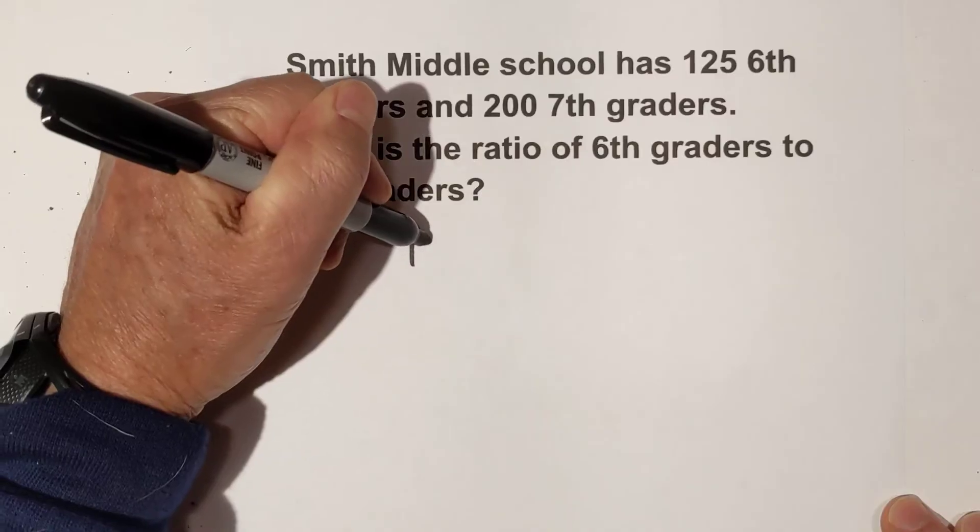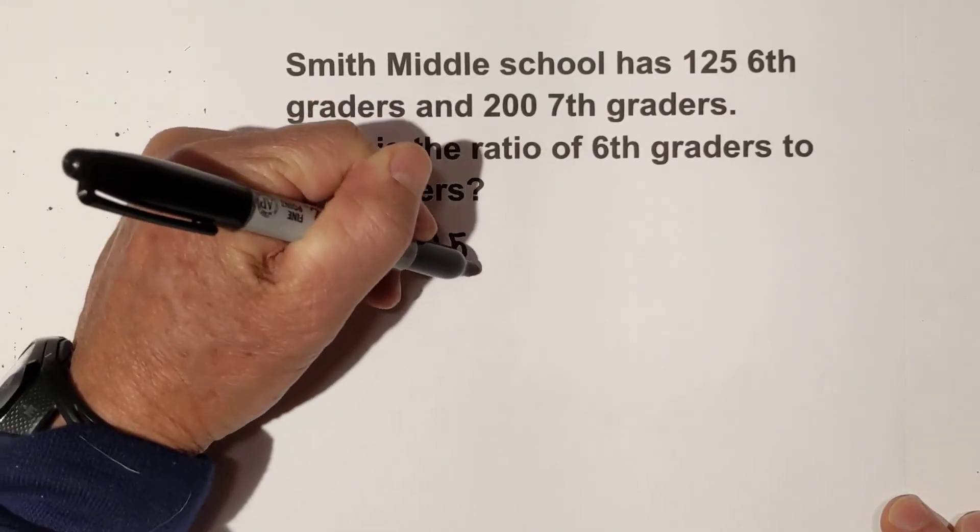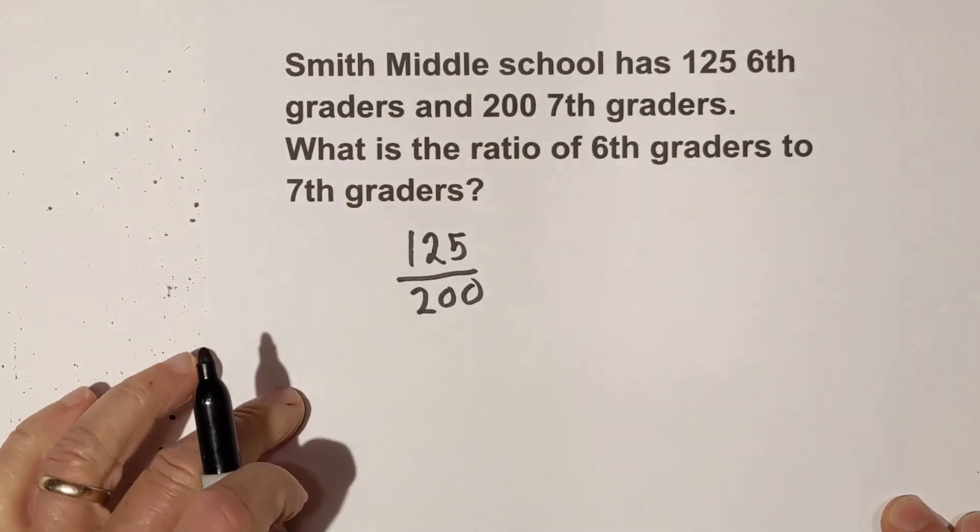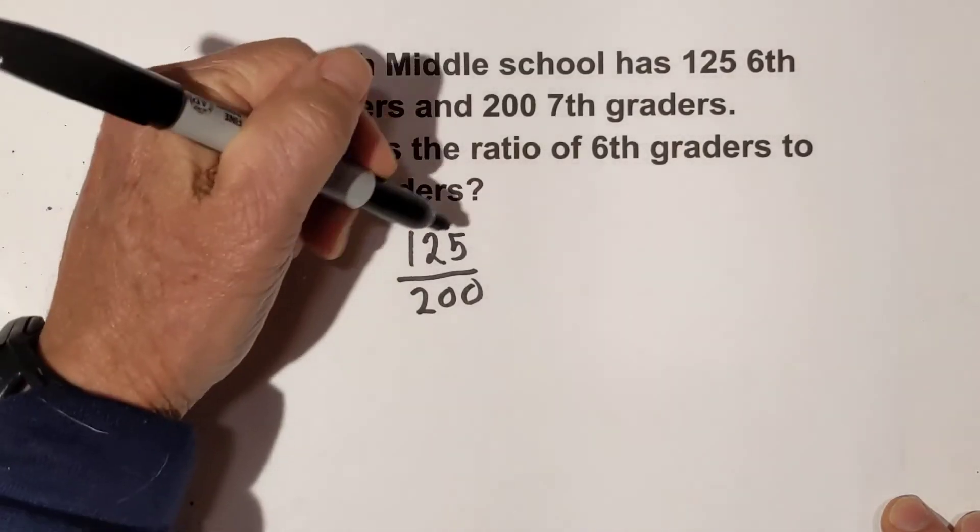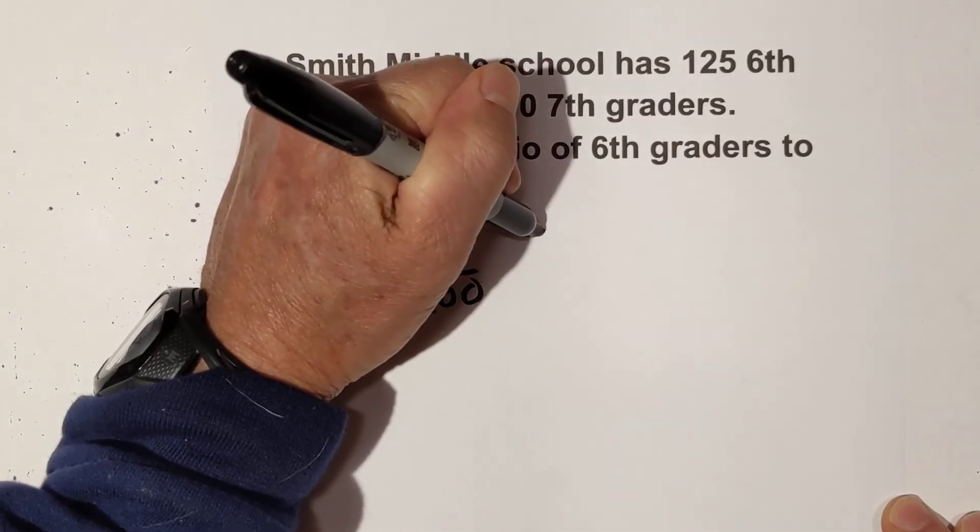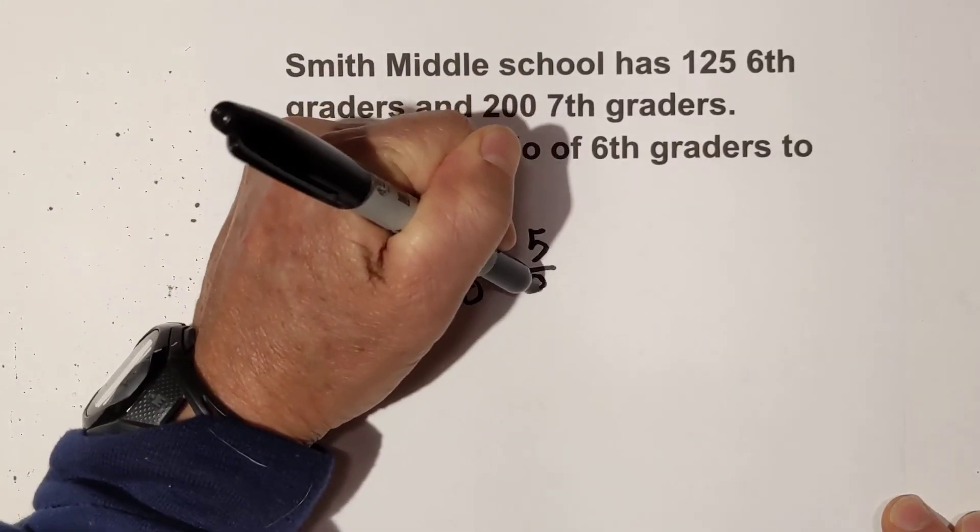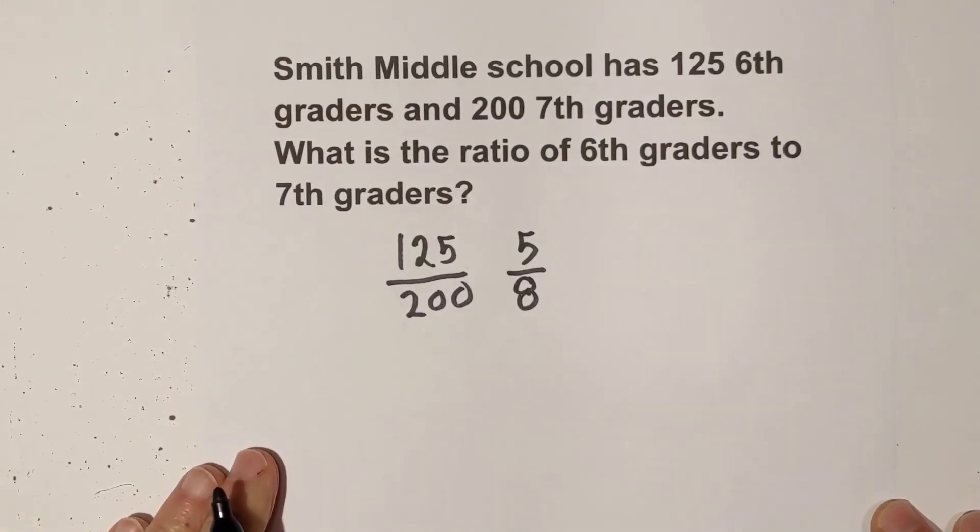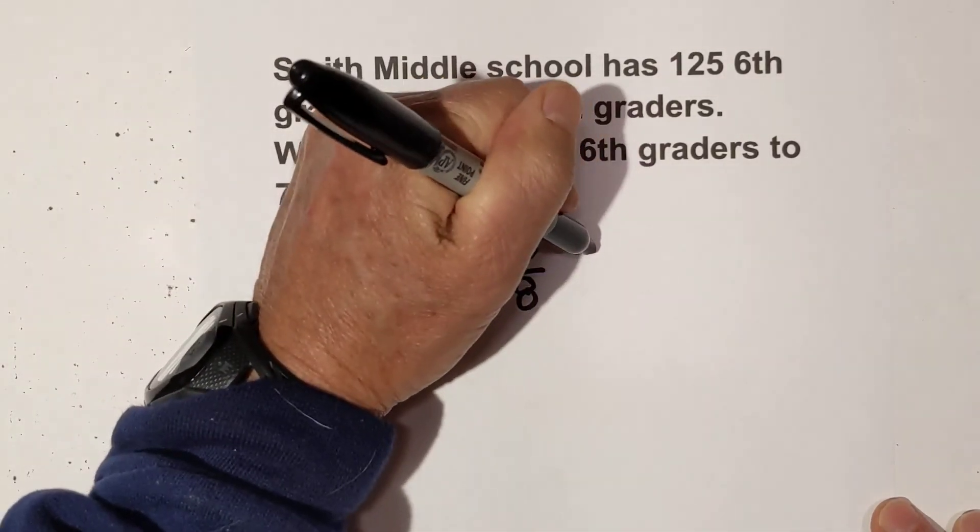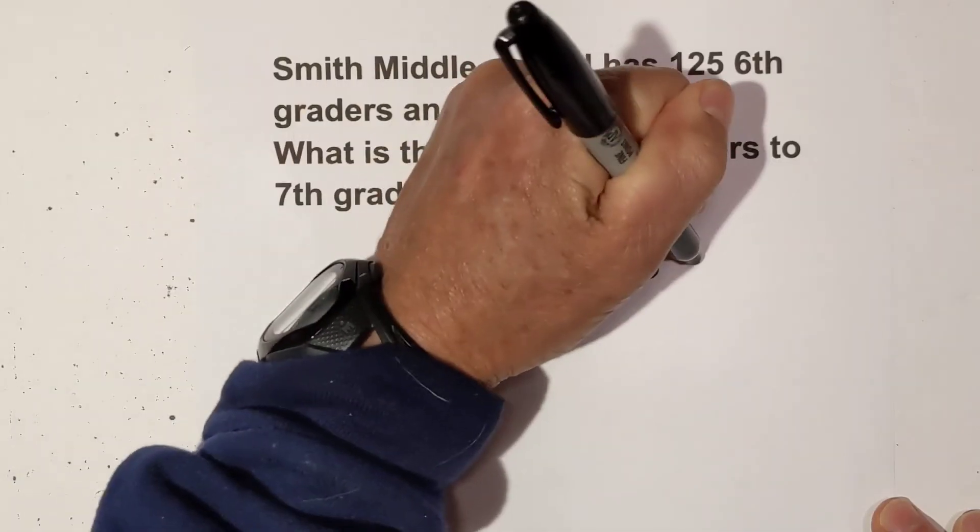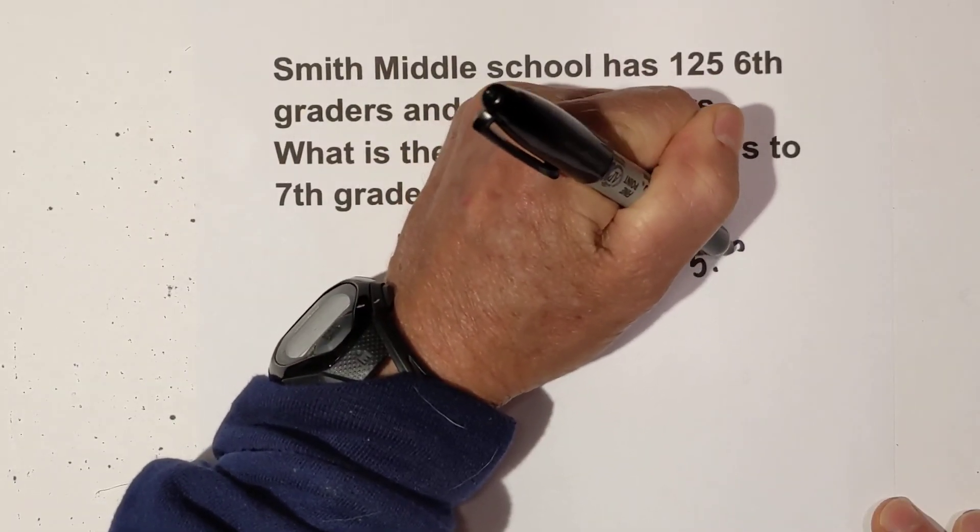Let's write it in fraction form, so we have 125 over 200. We can simplify: 25 goes into both of these. 25 goes into 125 five times and it goes into 200 eight times. And remember we can write this 5 to 8 or 5:8.